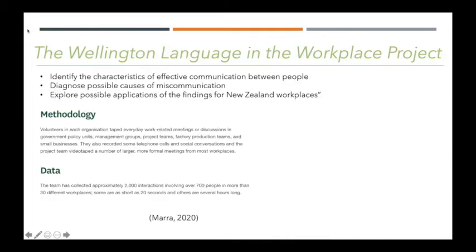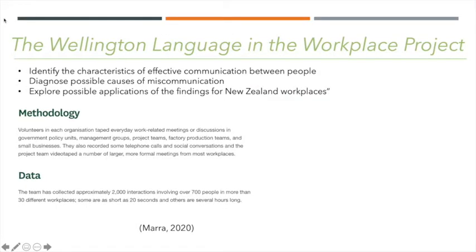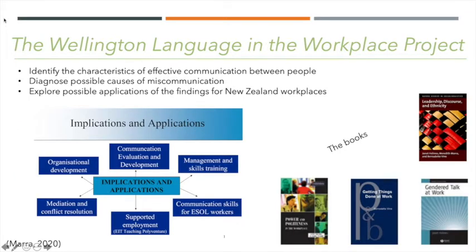The Wellington Language in the Workplace Project is about collecting data from workplaces using recordings and identifying the characteristics of effective communication between people, diagnosing the possible causes of miscommunication, and exploring possible applications of the findings for New Zealand workplaces. They use the data and observations from this project for many different things, as shown in this diagram from their website. They have also published four books so far using that data.